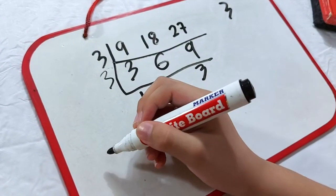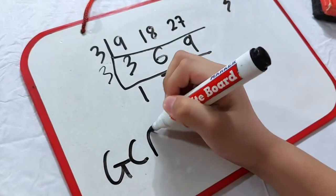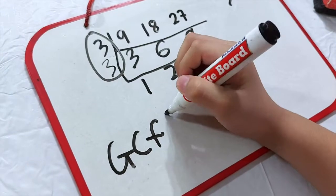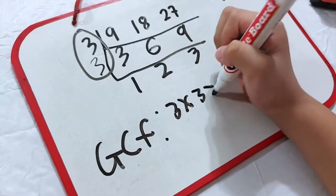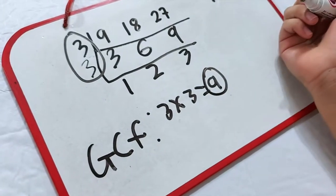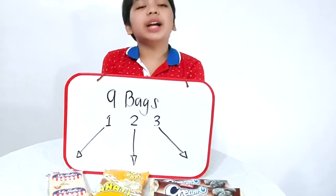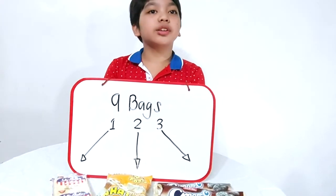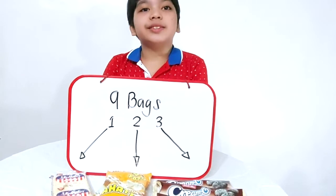Now, let's get the GCF. We need to multiply the numbers on the side. So, GCF is 3 times 3 equals 9. Easy, right? Now we know that we need 9 bags. Each of those bags will have 1 cracker, 2 cupcakes, and 3 cookies.